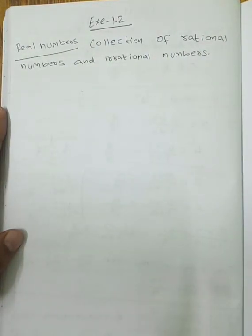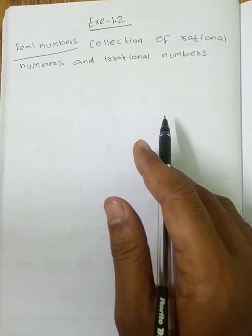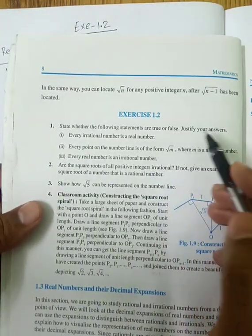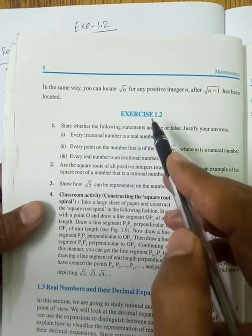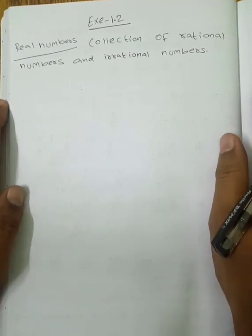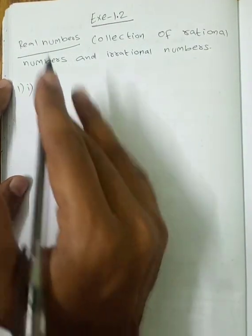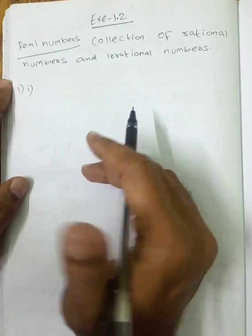Every real number corresponds to a unique point on the number line. Now, Exercise 1.2 — first question: state whether the following statements are true or false and justify your answer. Every irrational number is a real number. Answer: True.